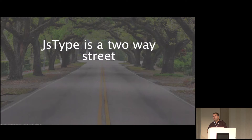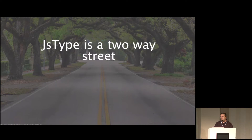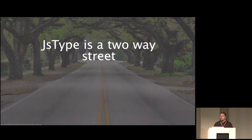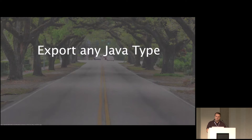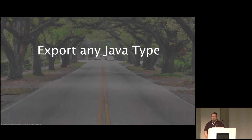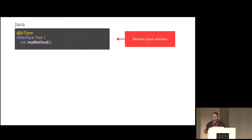That covers the direction of Java to JavaScript. But the reverse direction is also important. The @JSType annotation is a two-way street — it's a contract that says the underlying object must implement the methods in the interface, but it also says that if you have a Java implementer, those methods will be exported to JavaScript keeping their names. This allows you to take any Java type and export it to JavaScript, so JavaScript developers in your company can use your Java library in their own code.